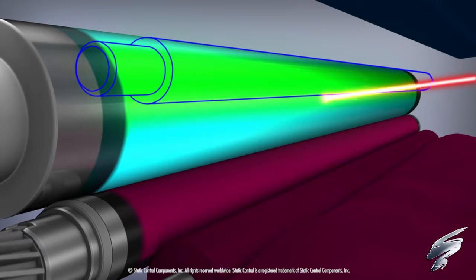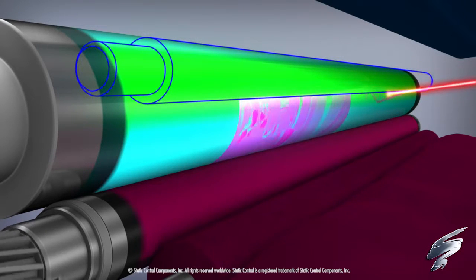The OPC drum is then exposed to a laser, which forms the image. This area is more positively charged than the areas not exposed to the laser.